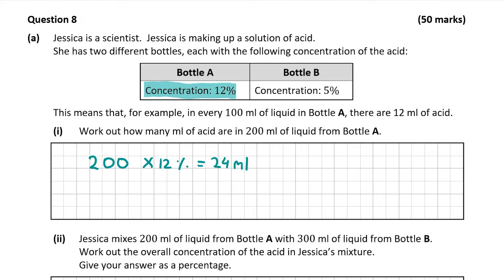That's the same thing as multiplying 12 by 2. As we were told in the example, in 100 millilitres of liquid in A there's 12 millilitres of acid. So whichever way you do it, you'll get full marks. But you're not always given the example, which is why I wanted to show it mathematically like that.